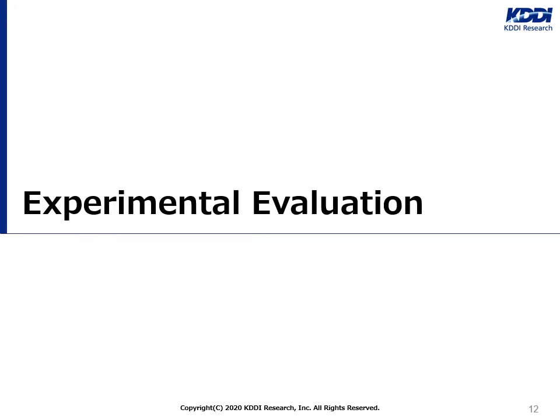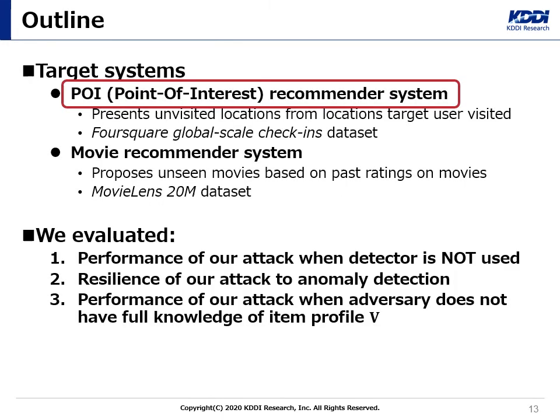Finally, I will talk about experimental evaluation to validate the effectiveness of our model inversion attack. In our experiments, we considered two types of recommendation systems using factorization-based collaborative filtering. One is a point-of-interest recommendation system, and the other is a movie recommendation system. The POI recommendation system presents visited locations the user would be interested in from locations visited in the past, implemented with the Foursquare global scale check-ins dataset. The movie recommendation system proposes unseen movies the target user would prefer based on past ratings, implemented with the MovieLens 20 million dataset.